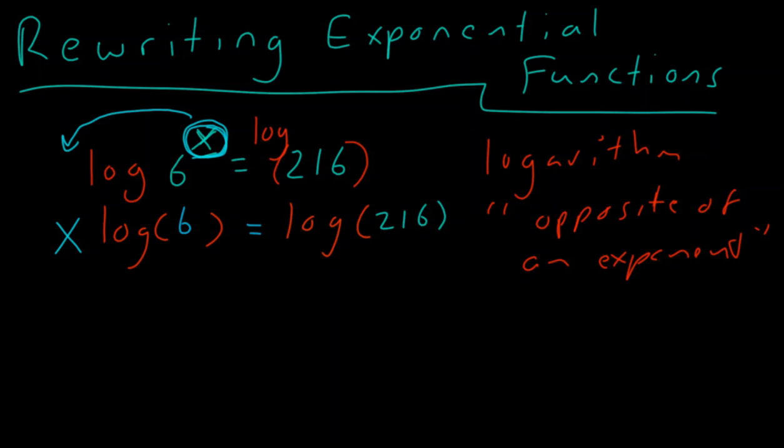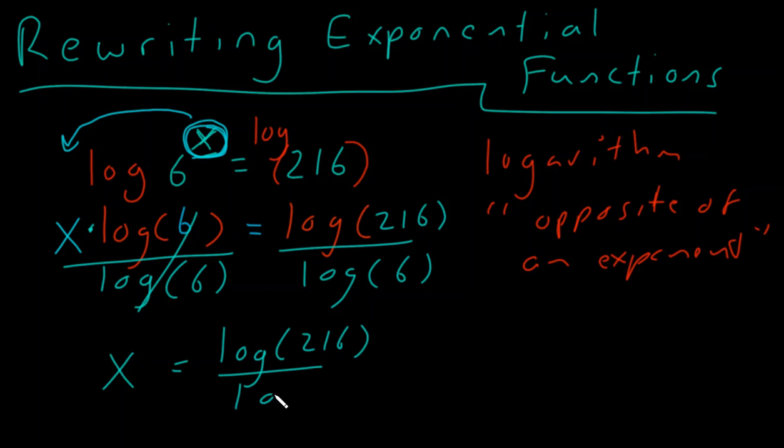Now from here, what would you do to get the x by itself? Well, remember, when two things are side by side, they're being multiplied. So what we'll do is we'll divide both sides by the log of 6. And those cancel. And we get x is equal to the log of 216 divided by the log of 6.